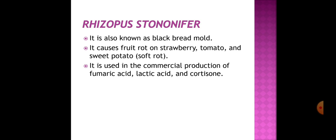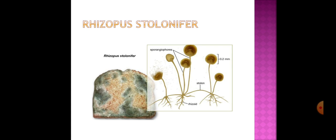Rhizopus stolonifer, also known as black bread mold, is known to cause fruit rot on strawberries, tomatoes, and sweet potato. It is used in the commercial production of fumaric acid, lactic acid, and cortisone. The microscopic view of Rhizopus stolonifer shows sporangiophores, stolons, and rhizoids.